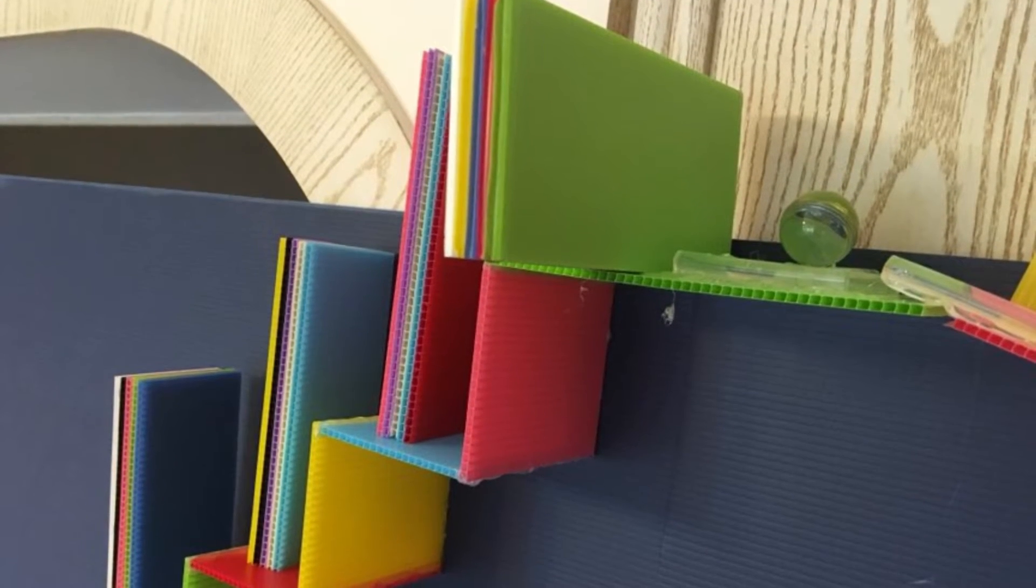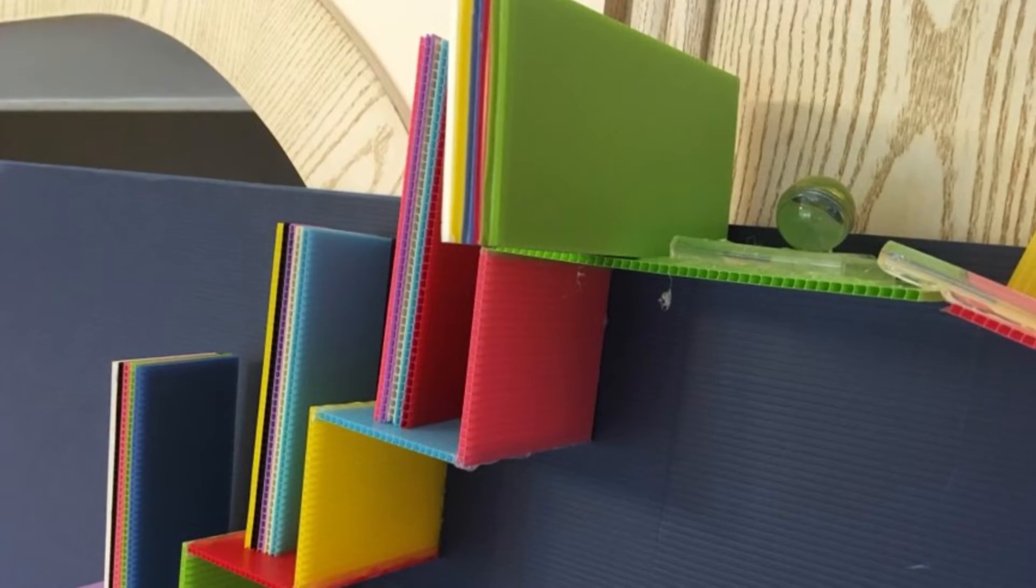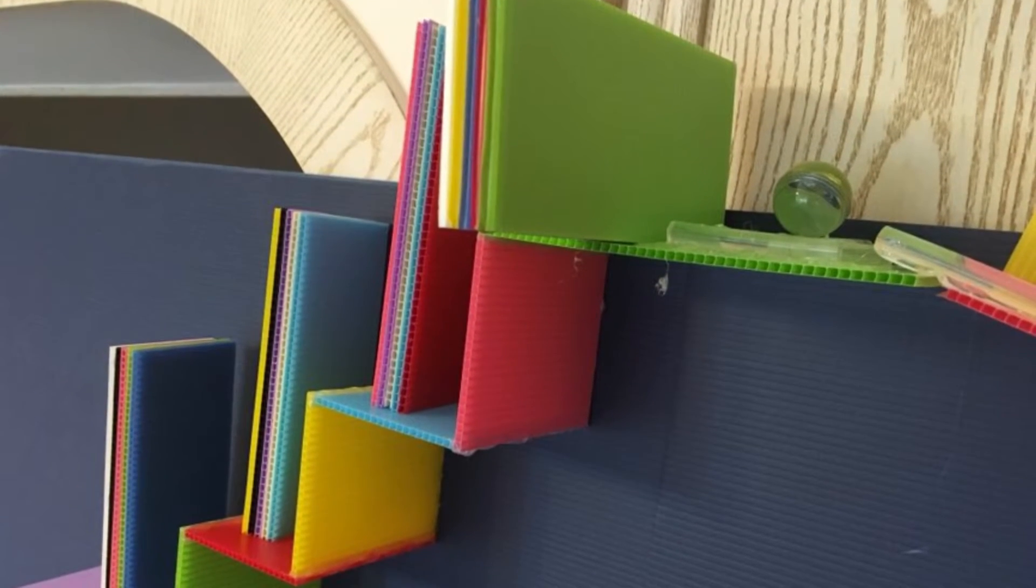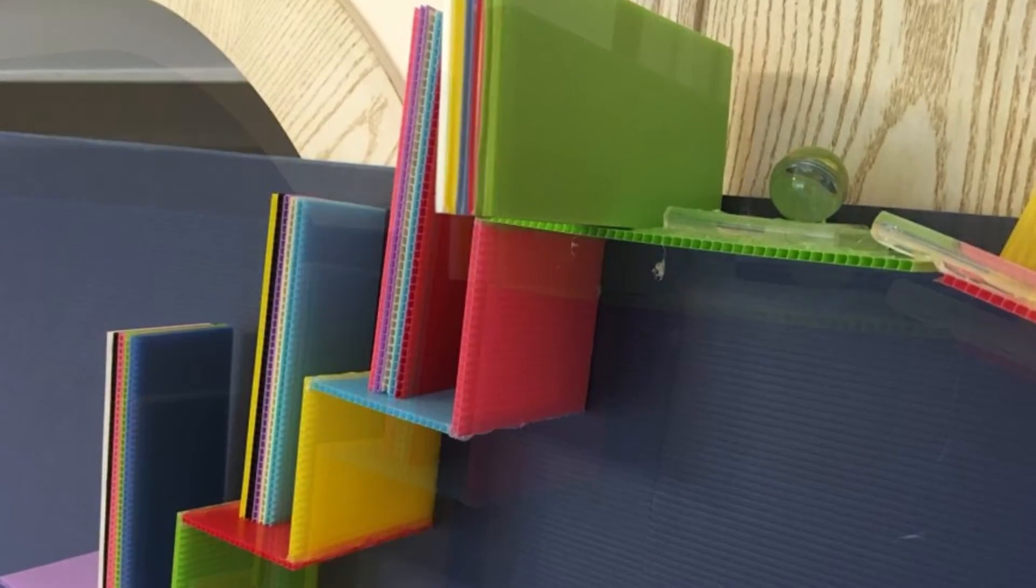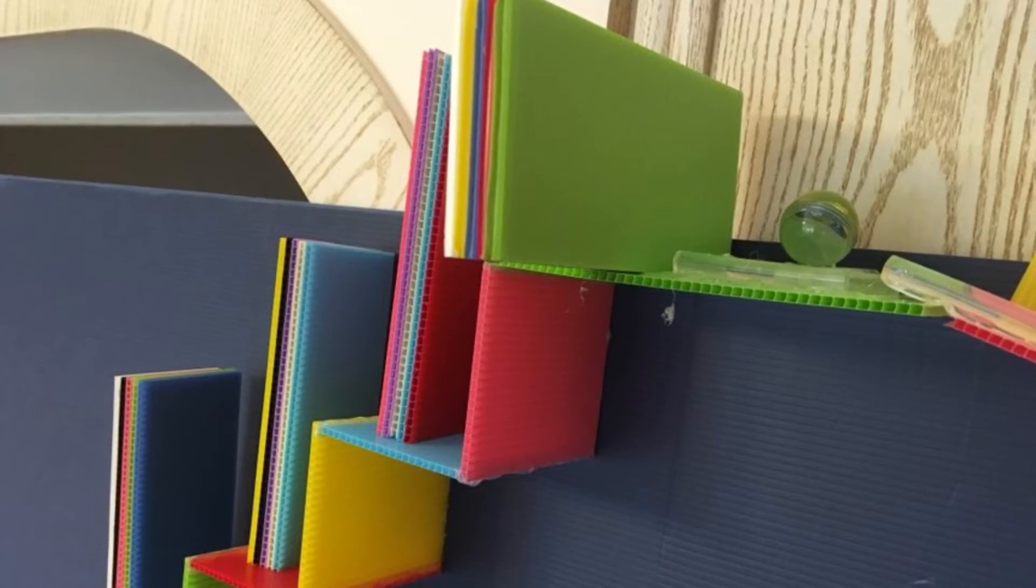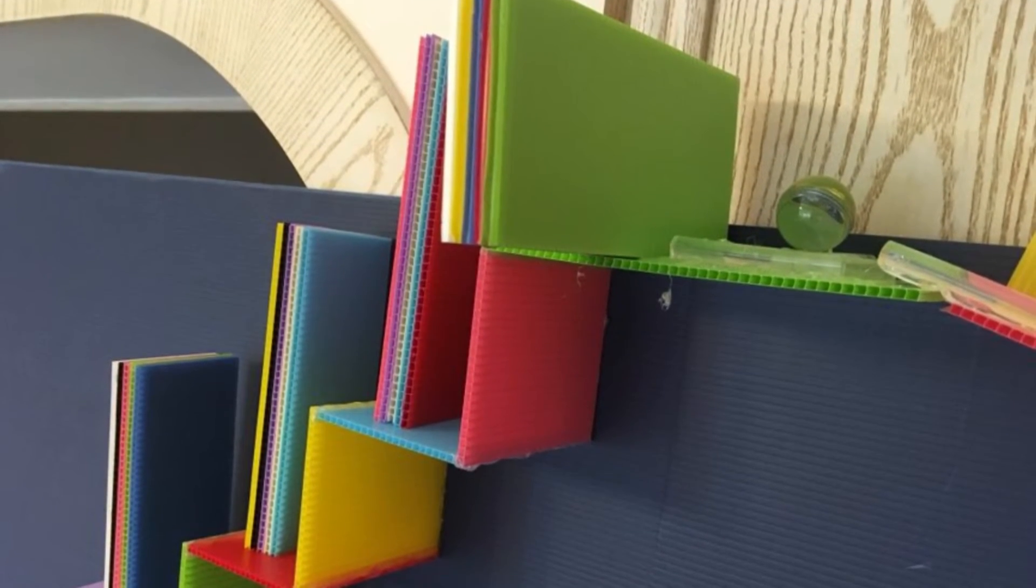One part where the object is experiencing air resistance is where the dominoes are falling. At first I only used two boards but I realized the air resistance was too strong and the dominoes would often change their direction. So in order to make the dominoes fall faster, I stuck a lot more boards together.